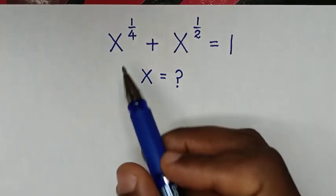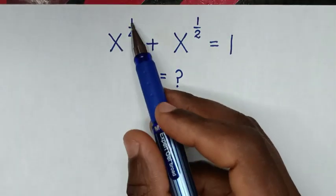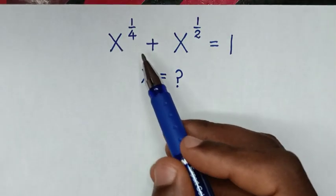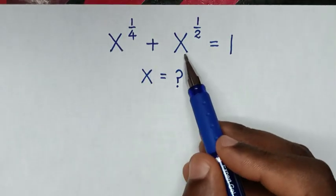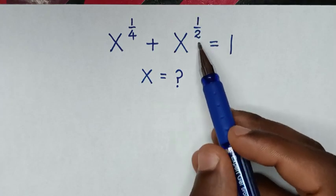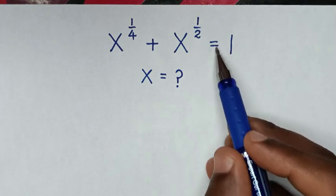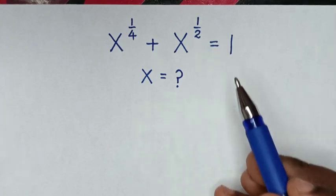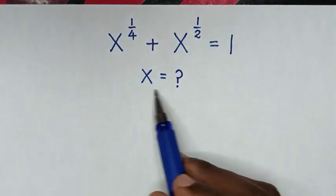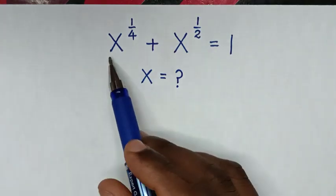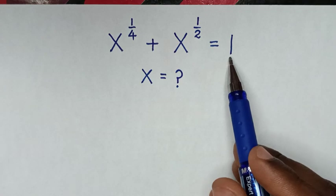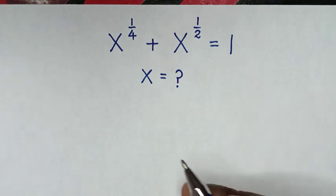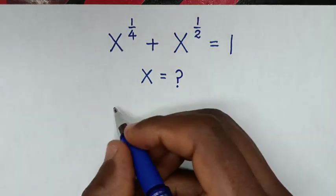Hello. How to solve x to the power of 1/4 plus x to the power of 1/2 is equal to 1 — to find the value of x from this equation.